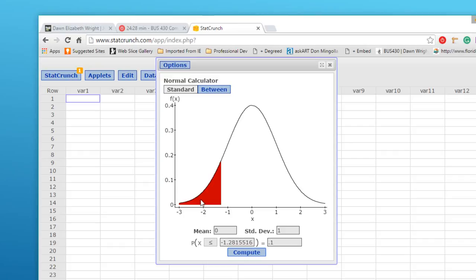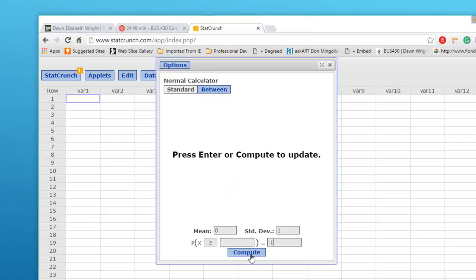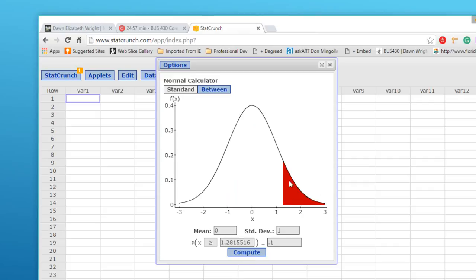By inspection, we know the normal curve is symmetrical. That means the plus z would be plus 1.282. But let's just check and see. I want to click on the greater than symbol to get us into the right half of the curve. Let's put our 0.1 in again for the 10% that we want for the upper end. Click on Compute. We can see that this 10% area above z gives us again a z of 1.281.